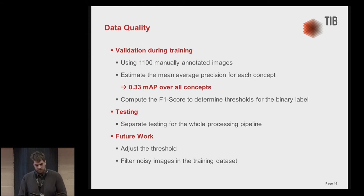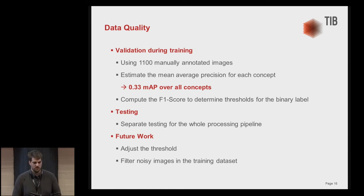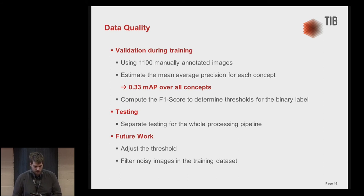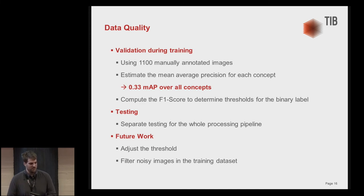When we go to testing, we deploy our module to the AV portal systems to test the whole processing pipeline — from finding keyframes and loading images, to predicting probabilities for each concept, and visualizing on the front end. For future work, we want to adjust the thresholds, as some concepts are detected too often currently. We also want to filter noisy images in the training data — for example, when searching for tables, the English word can also retrieve furniture, making the dataset noisy.